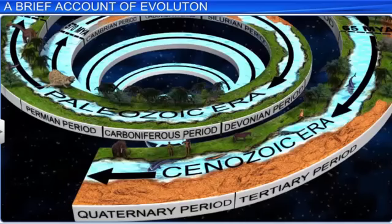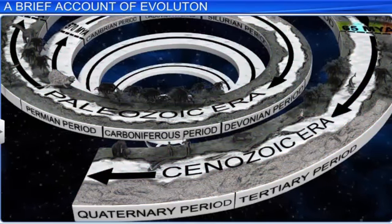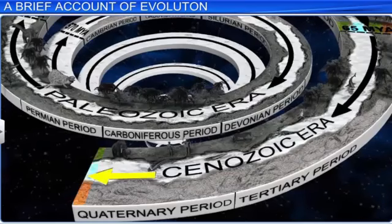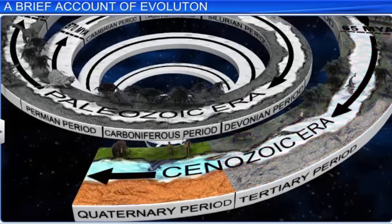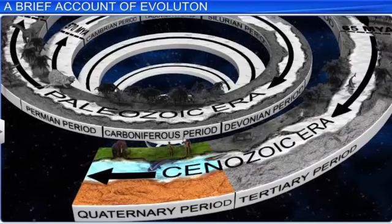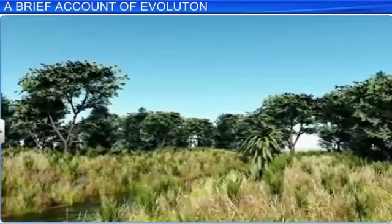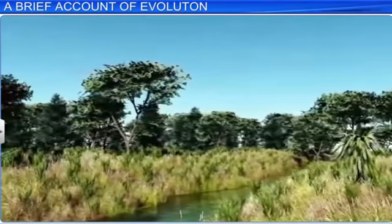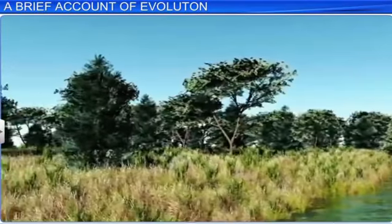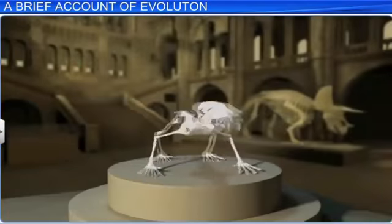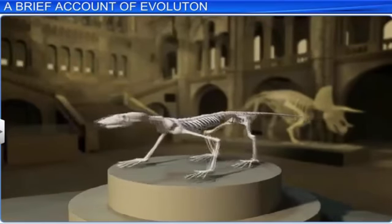Let us now take a look at the Cenozoic era, which began 65 million years ago and continues till today. This era includes the Tertiary and Quaternary periods. In the Cenozoic era, plants such as bryophytes and angiosperms flourished and continued to spread and diversify on earth. This era is also known as the age of mammals, which are highly evolved vertebrates.